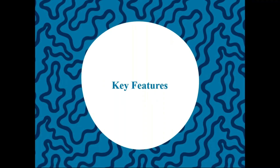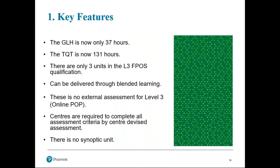On to the key features of the Level 3 FBOSS. The guided learning hours are now 37 hours, which is much reduced compared to the Level 4 versions. The total qualification time is now 131 hours, which again is considerably less than the Level 4 versions. There are only three units in the Level 3 FBOSS, which can be delivered through a blended learning format. There is no external assessment for Level 3 from Pearson — which you may know as the online POT tests — and there is no synoptic unit in the Level 3.